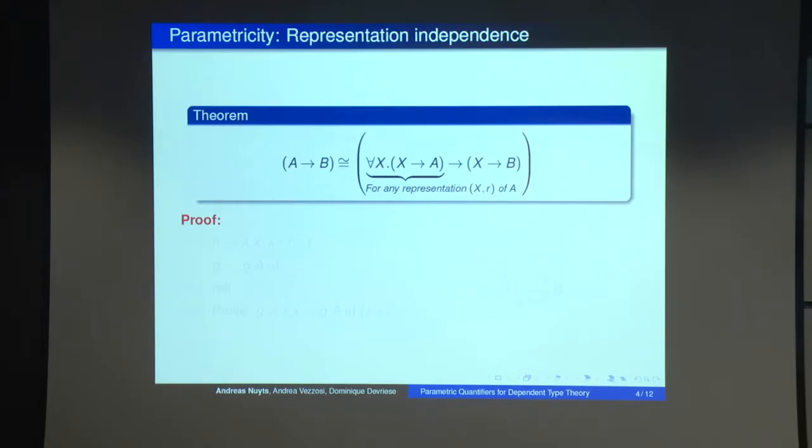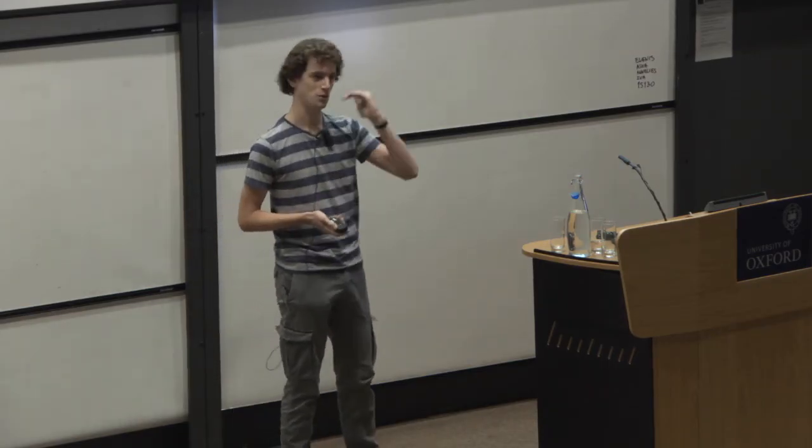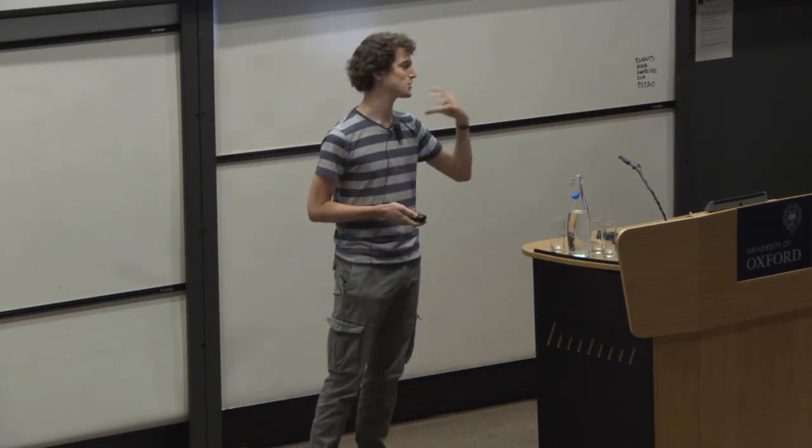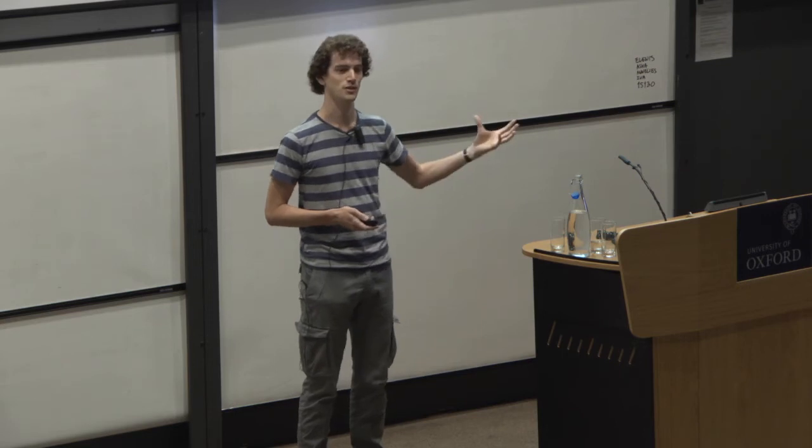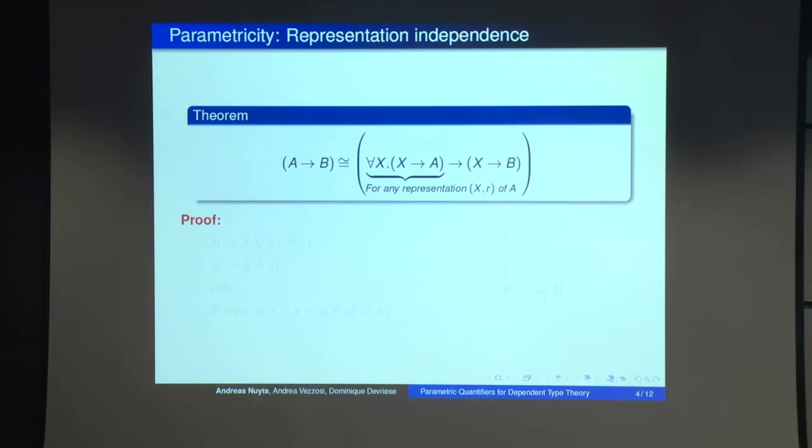One of the original motivations for parametricity is representation independence. So suppose we have two fixed types A and B, and A is like an interface, so it lists a bunch of operations and you make an element of A by implementing each of the operations. Then typically you don't create elements of A by ad hoc implementing each of the operations. Typically you'll take some more intentional type X and then prove that if you have an element of X then you can implement all of the operations using that.